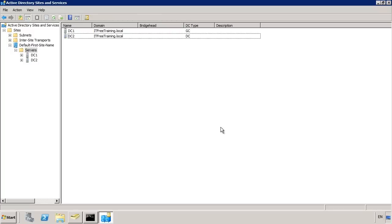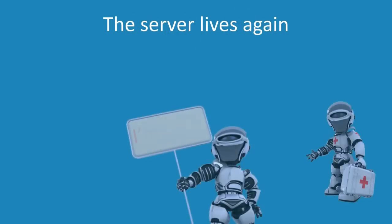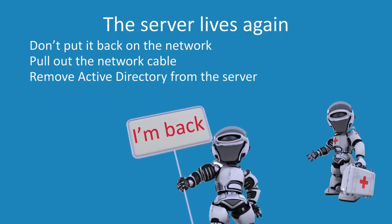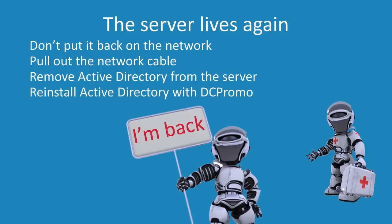But what happens if after you seize the role, you manage to recover the server? The important thing to remember is to not put the server back on the network. If you start the domain controller back up, you will essentially have two domain controllers on the network with the same operational master role. This can potentially cause all kinds of problems. The best option is to reformat and start again, but you may have data on the server that you want or software that is difficult or time consuming to reinstall. To recover the server, first pull out the network cable from the server. This will stop it from communicating to clients and other domain controllers. Next, start the server up with the network cable not plugged in and remove Active Directory from the server.